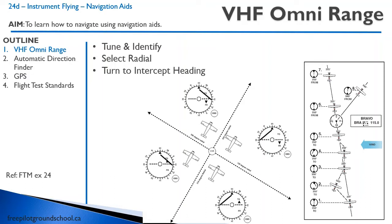When we talk about the VOR, think of it like a bicycle spoke — the VOR at the center and 360 radials emanating from it. What the VOR does is allow you to track one of those radials to or from the VOR.